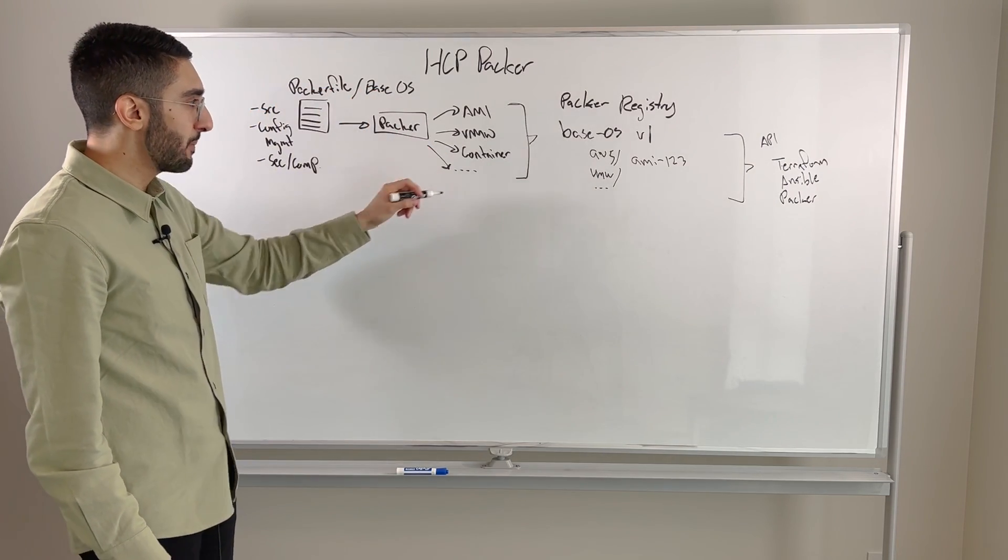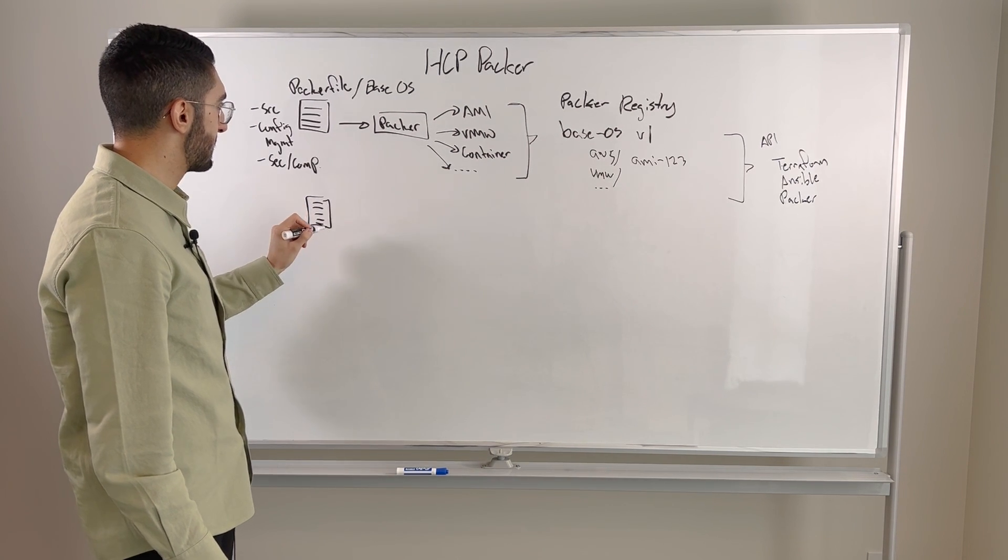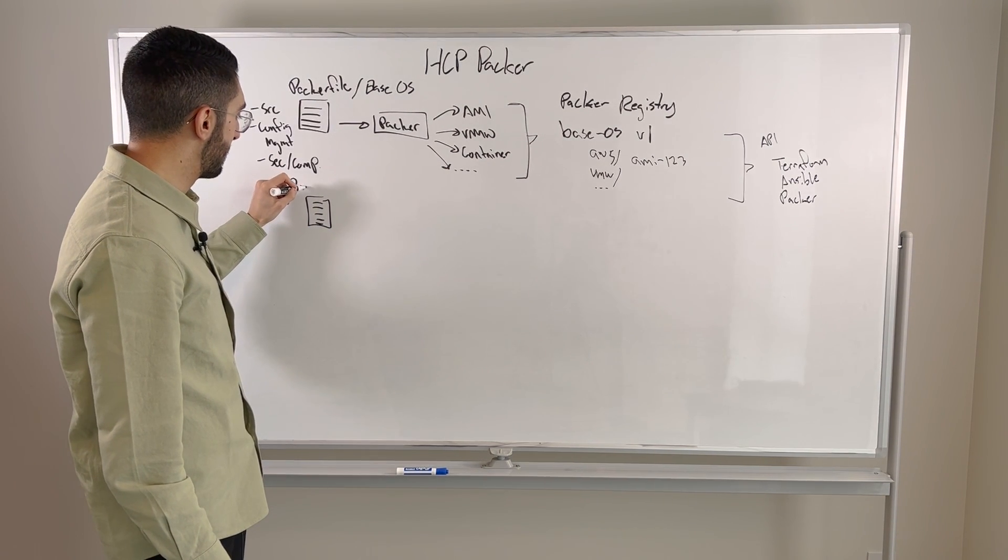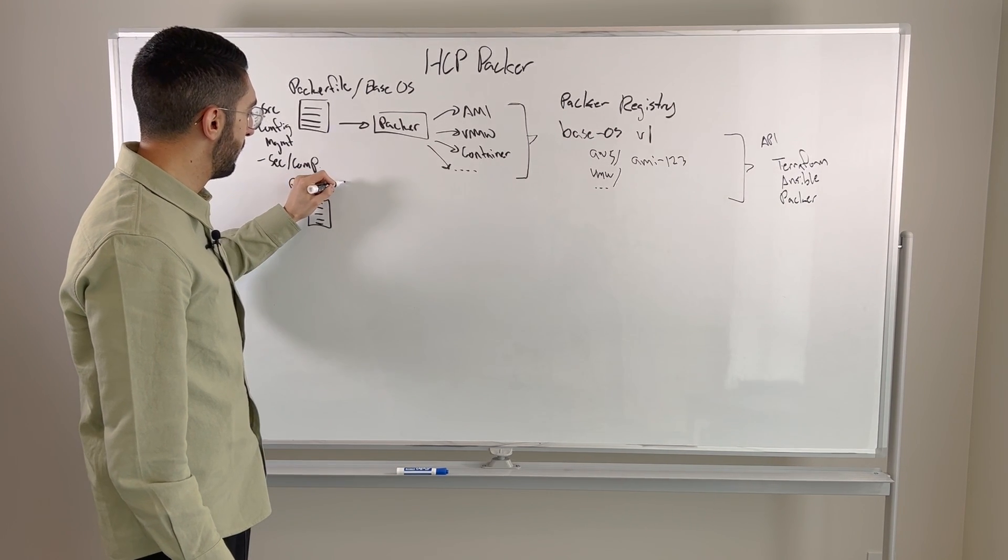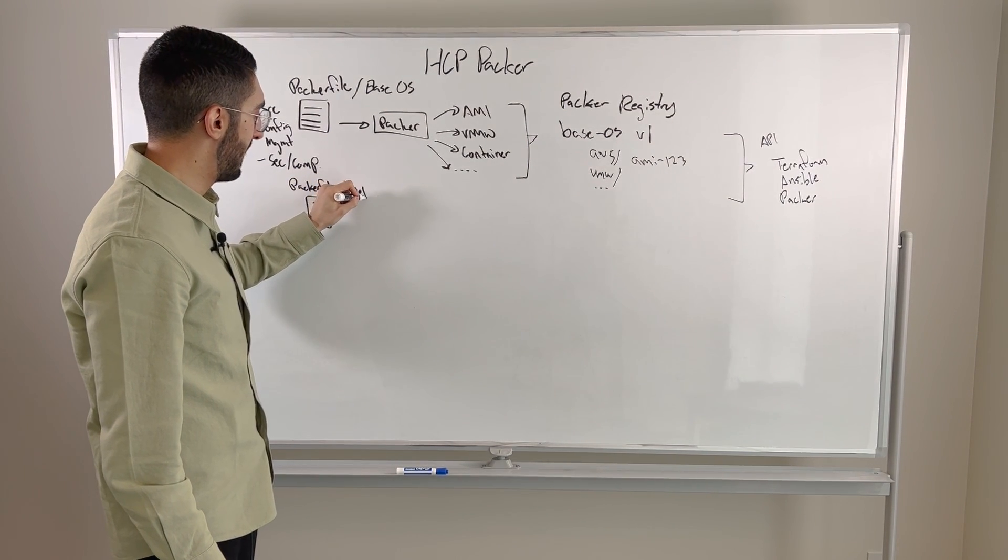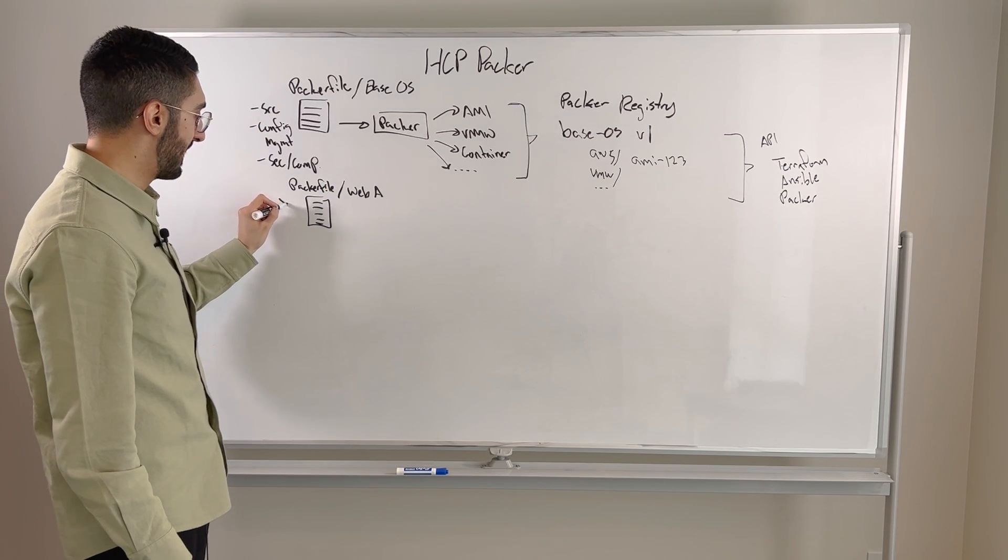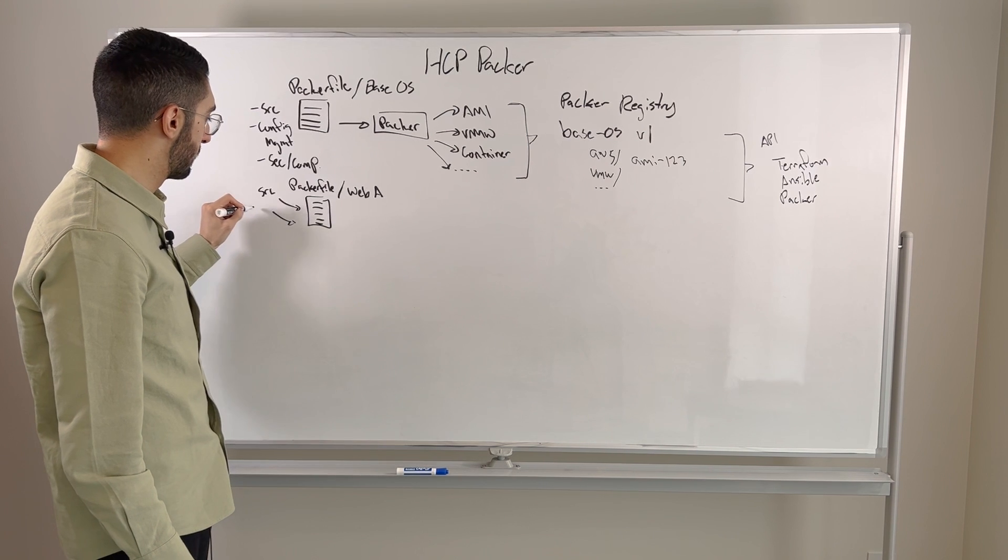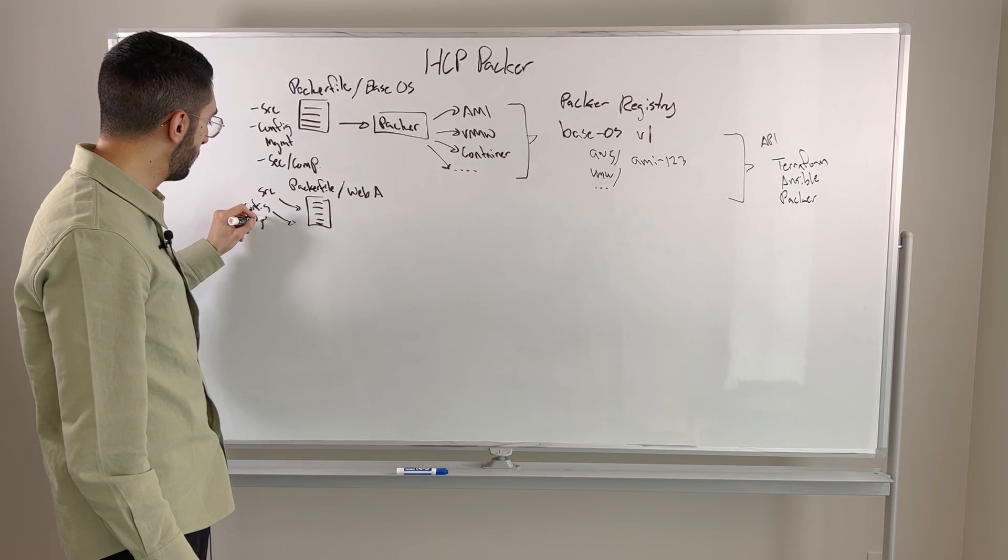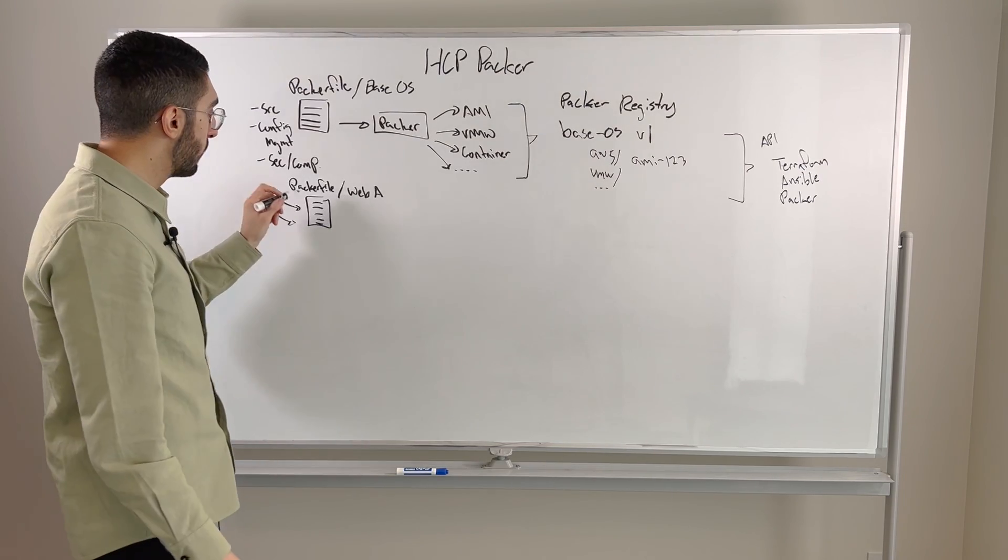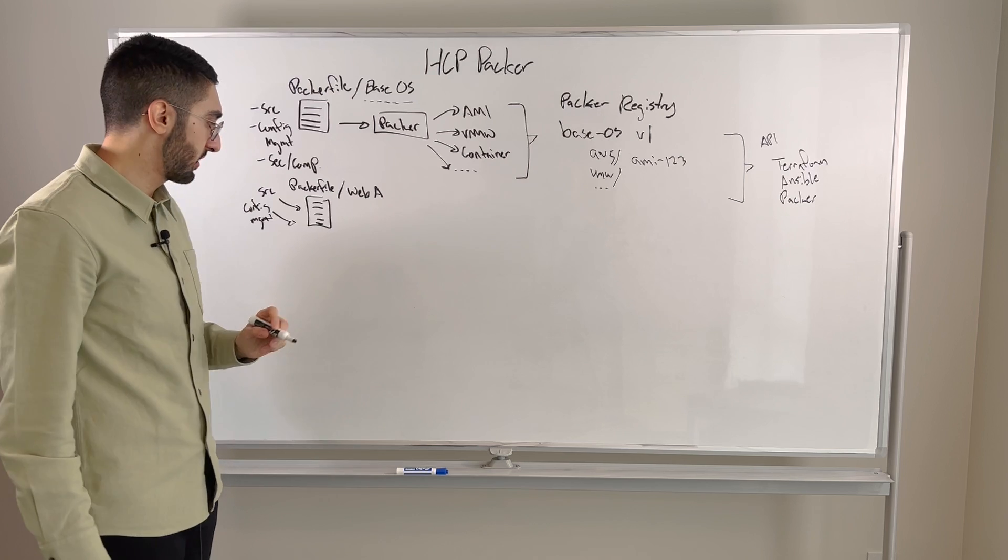So I might have a separate pipeline that I define. Let's just say in this case, I have my Packer file again. But now this is based for my web application A. Web application A obviously has its own inputs. Has its own source code, has its own config management. But now instead of starting from scratch, we might want to start by using the base OS as the underlying starting point.